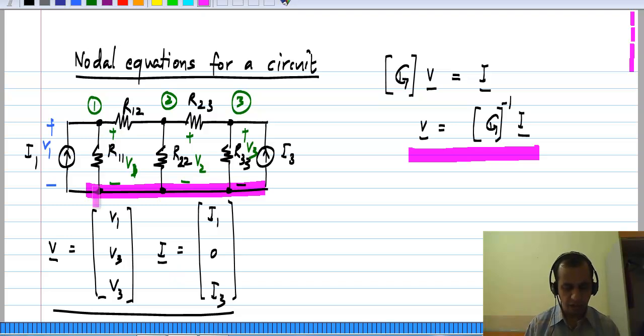And R11 is also connected between node 1 and 0. So, across R11 the voltage is V1. Similarly, across R22 the voltage is V2, across R33 the voltage is V3, and across I3 the voltage is V3. I mean this looks trivial, but this is just a systematic way of finding out all the branch voltages, and which can be applied to large circuits as well.